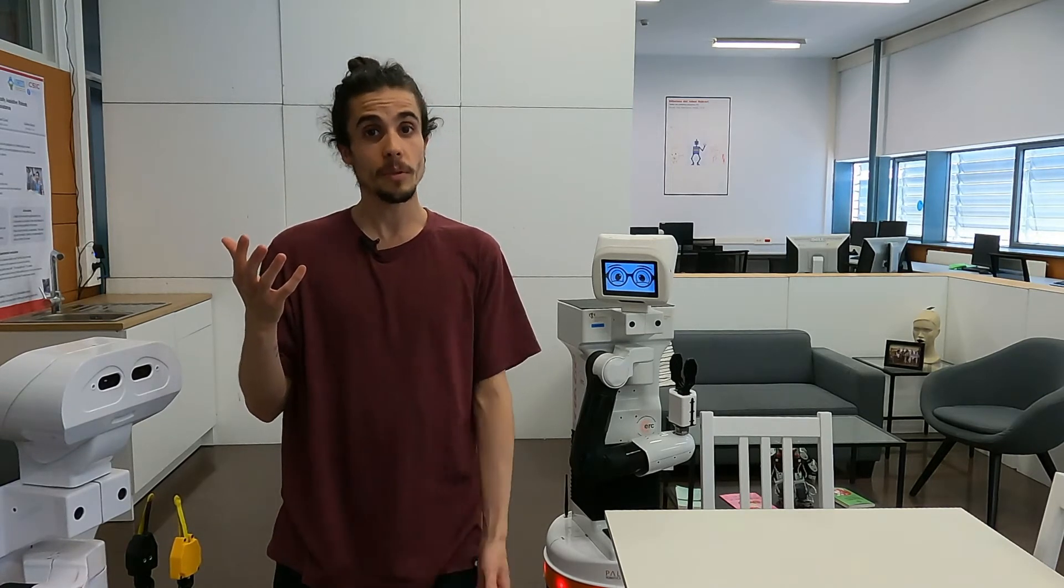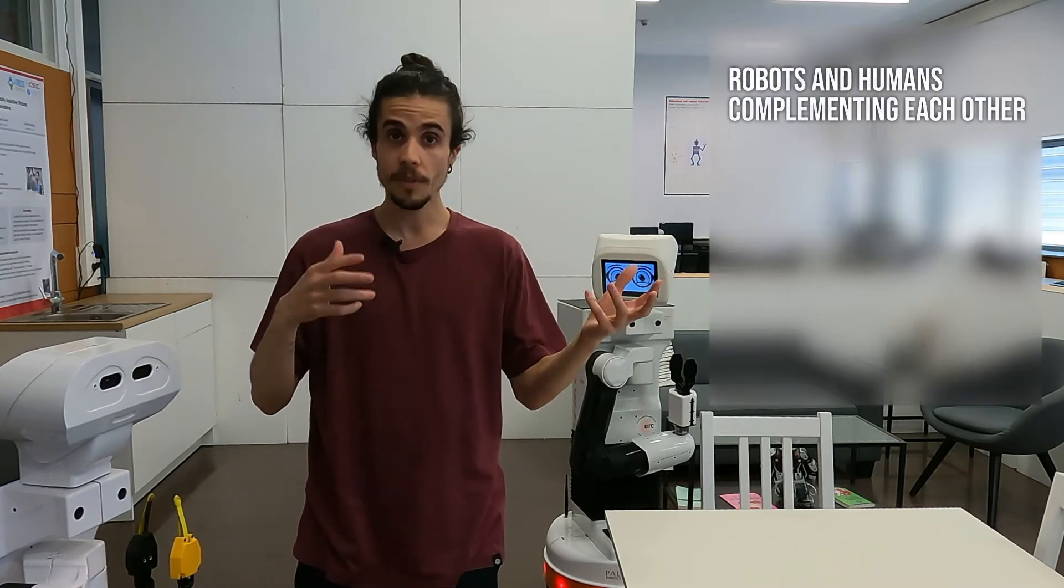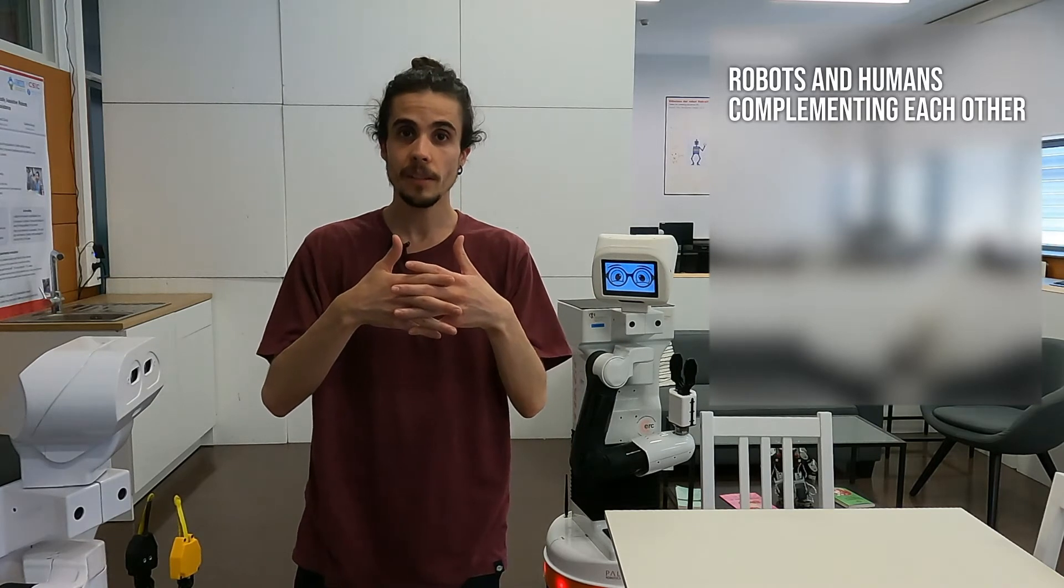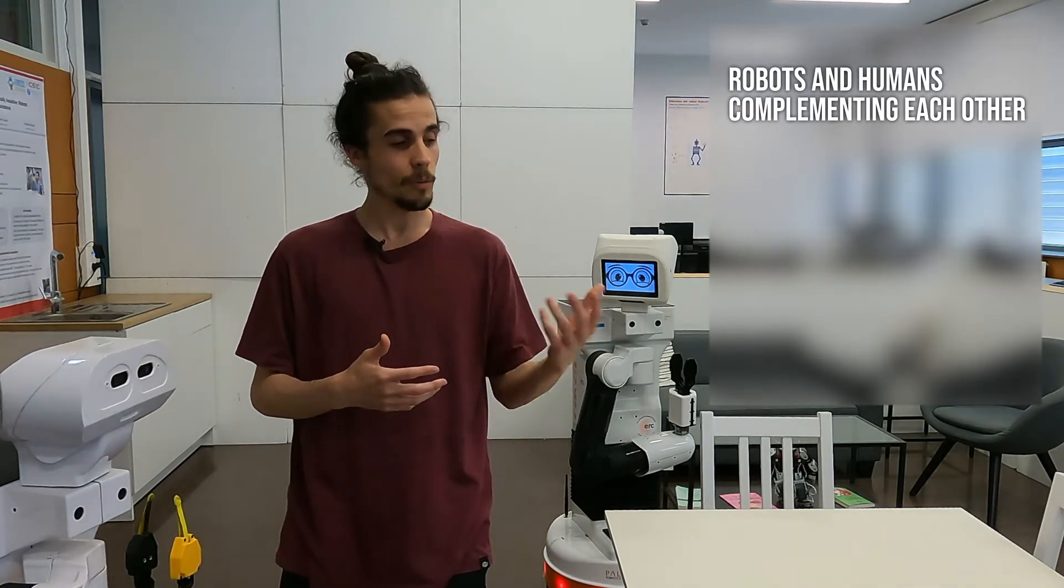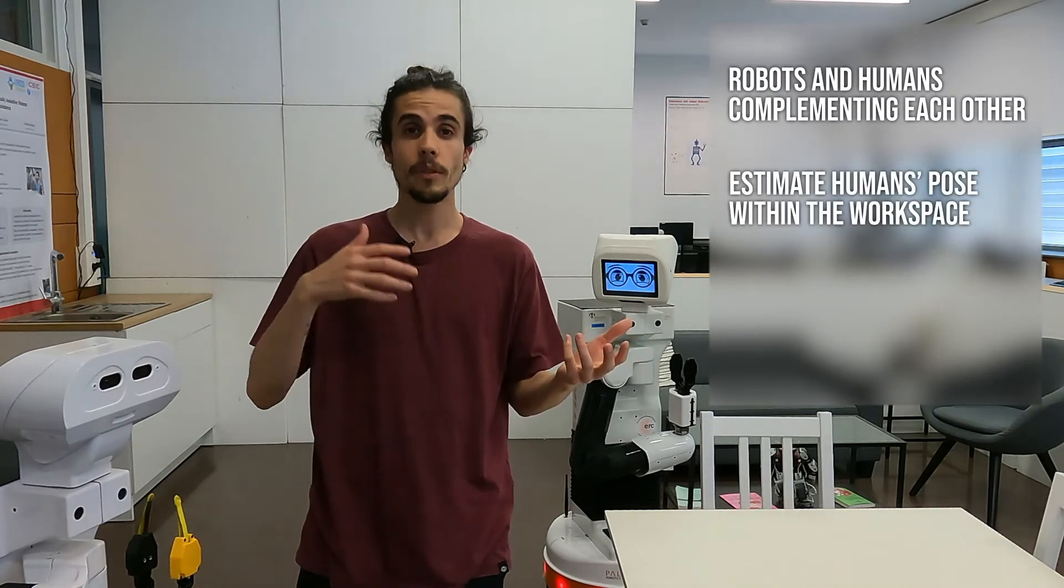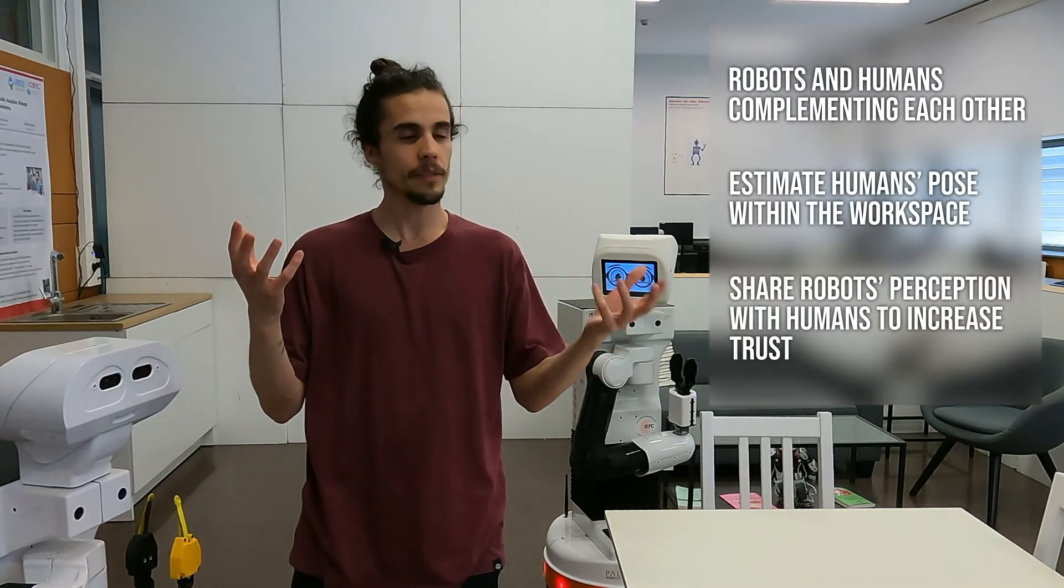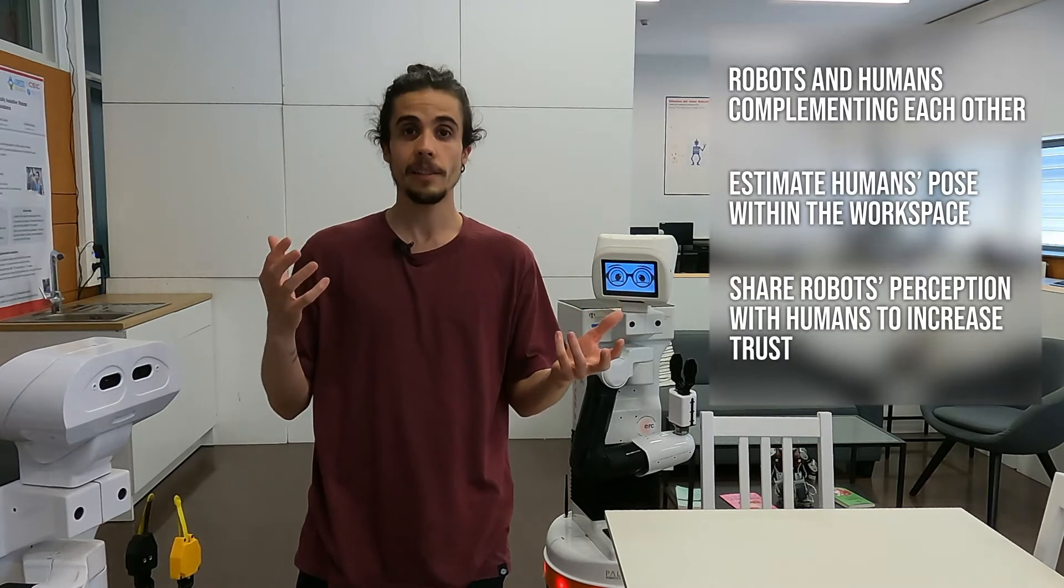In the robotic industries we can find both teams of humans and robots, however, these teams do not collaborate and they are separated by fences so that humans are protected from possible collisions. Collaborative Robotics proposes that both robots and humans collaborate, complementing their skills, but for a reliable and safe collaboration, robots should be able to estimate the pose of humans and also share this estimation in order to enhance humans' trust.